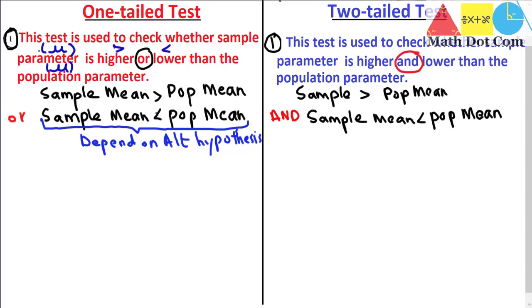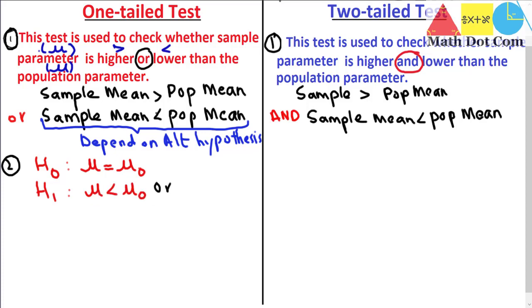Let's see how you can identify whether it's a one-tailed or two-tailed test by stating the alternative hypothesis. For a one-tailed test, if the null hypothesis is that the population mean equals the sample mean — represented as mu equals mu-naught — then the alternative hypothesis will be either that the population mean is less than the sample mean, or the population mean is greater than the sample mean, depending on your research question.